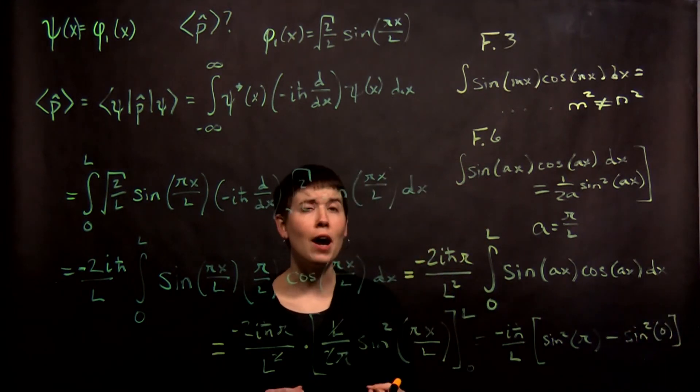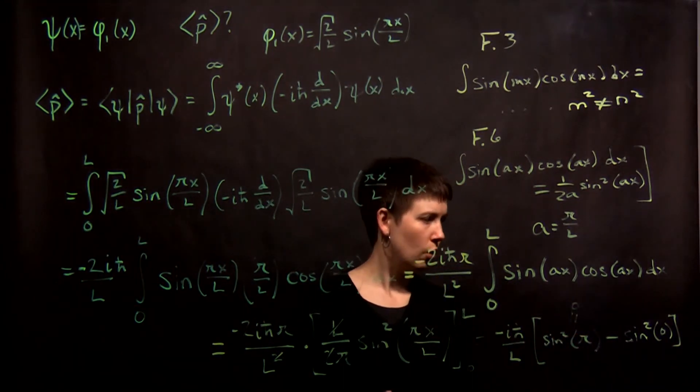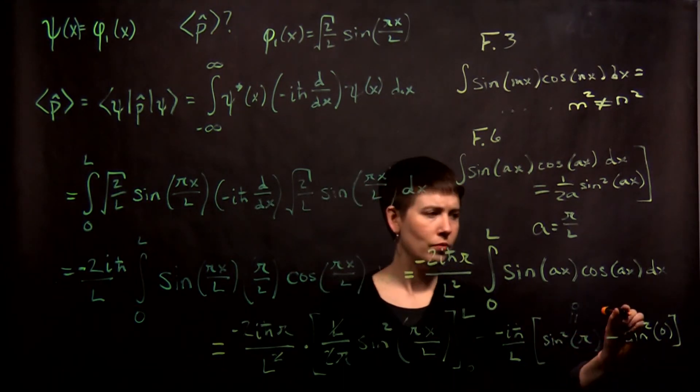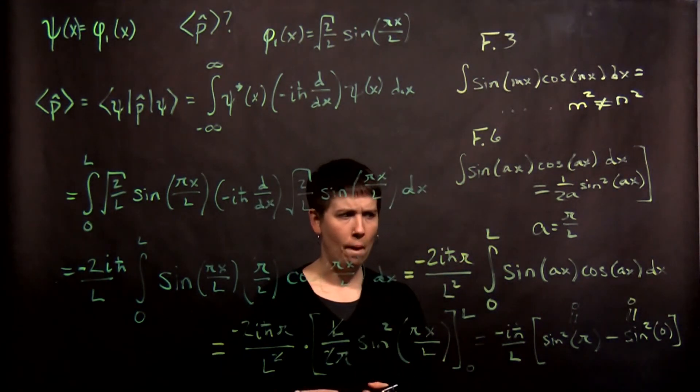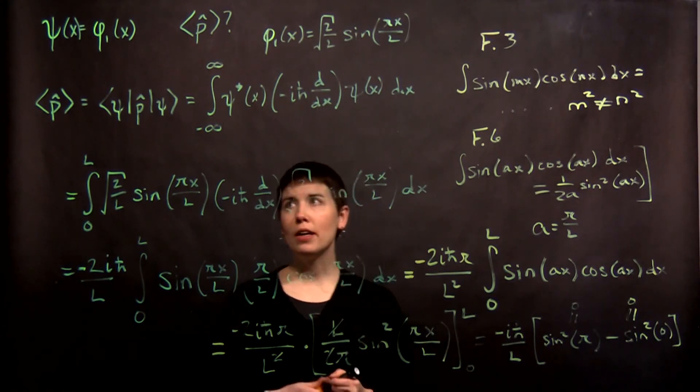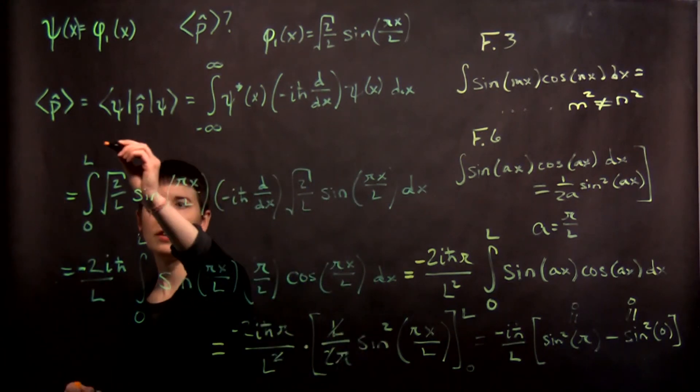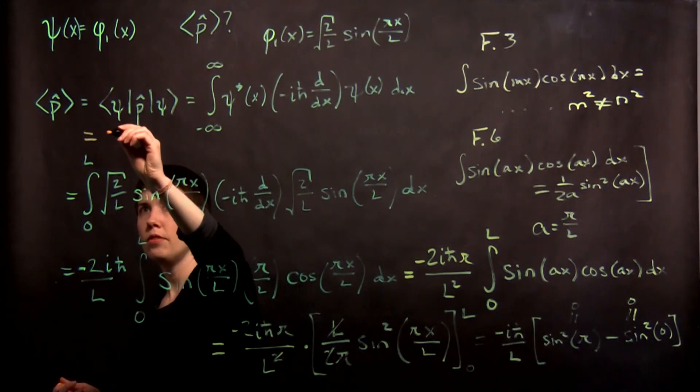Now what's going to happen? Well, I can cancel some stuff. I enjoy canceling. That feels very satisfying. One of those l's cancels here. So I'm left with negative i h bar over l, and then on the inside I have sine squared. I'll plug in l, so I get pi l over l, so that's sine squared of pi, minus plug in 0, sine squared of 0. What is sine of pi? Sine of pi is 0. Square it, you get 0. What is sine of 0? It's 0. Square it, get 0. So what do we make of this? I have 0 minus 0. That's still 0.